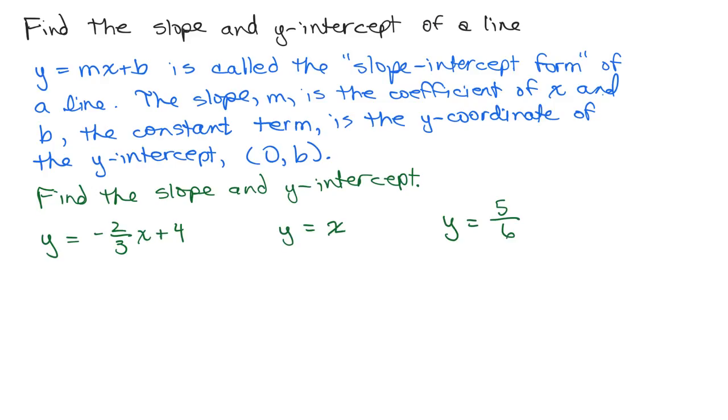We're going to find the slope and y-intercept of a line by looking at its equation. y equals mx plus b is called the slope-intercept form of a line. The slope, m, is the coefficient of x, and b, the constant term, is the y-coordinate of the y-intercept, which is really an ordered pair (0, b).